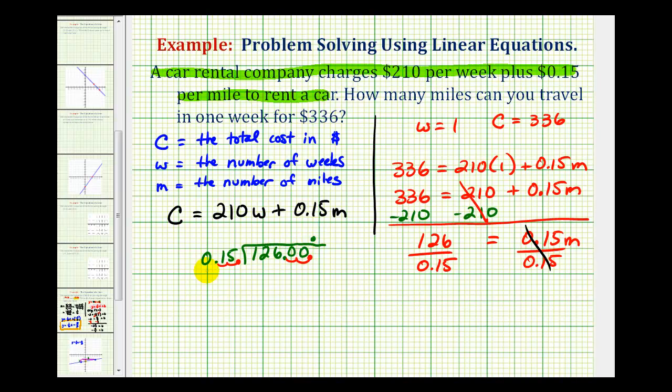And now we want to determine how many 15s there are in 126. That would be eight. Eight times five is 40. Carry the four. Eight times one plus four. That would be 12. Difference here is six, which is less than 15. So the eight is correct.